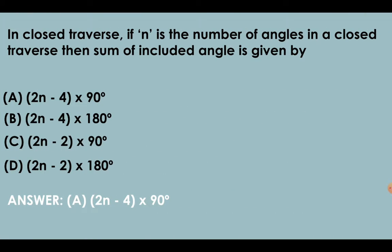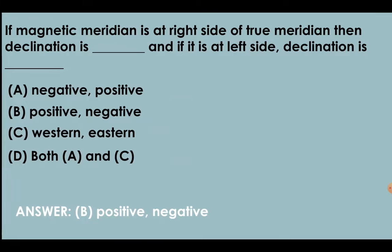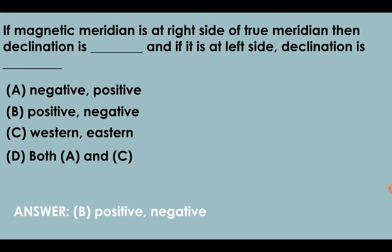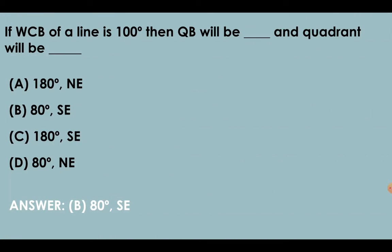In close traverse, if n is the number of angles in a close traverse, then sum of included angles is given by (2n - 4) × 90 degrees. If magnetic meridian is at right side of true meridian, then declination is positive, and if it is at left side, declination is negative. If WCB of a line is 100 degrees, then quadrantal bearing will be 80 degrees and quadrant will be southeast.